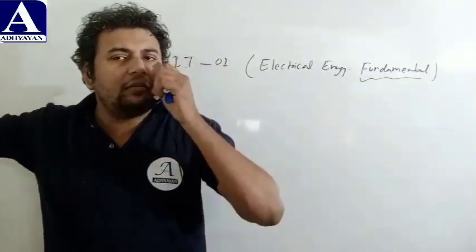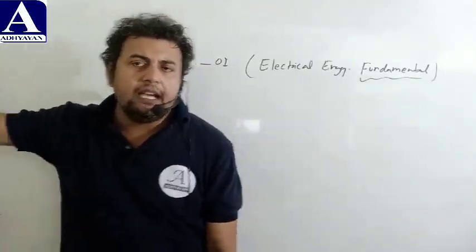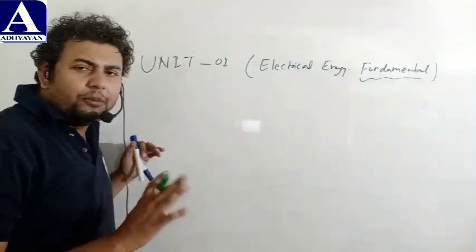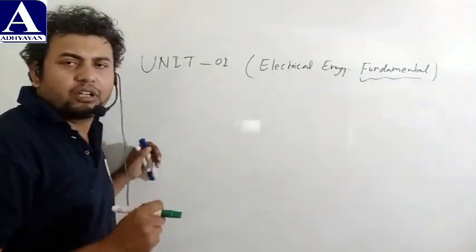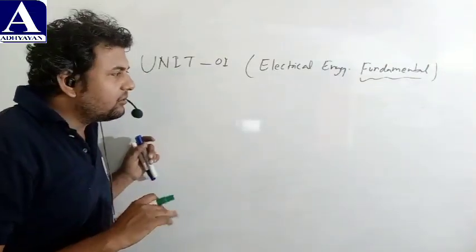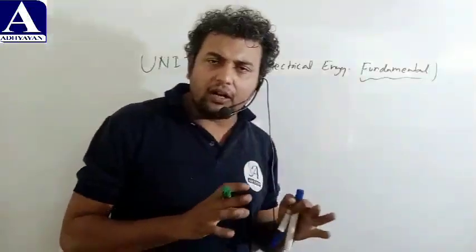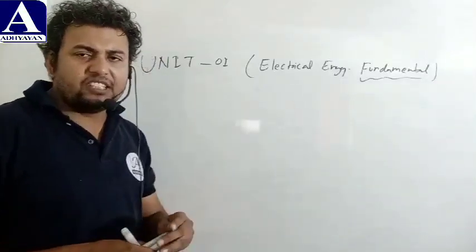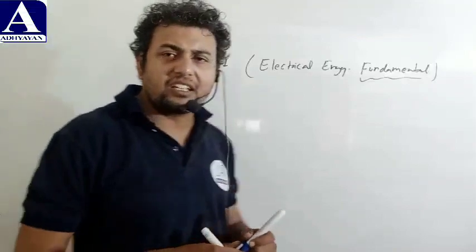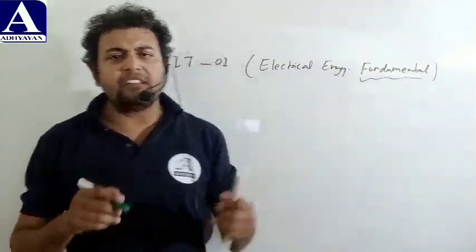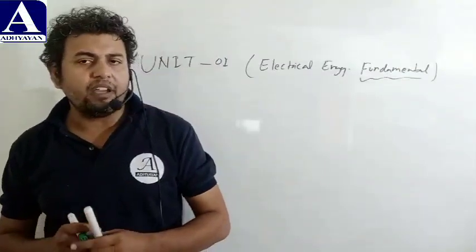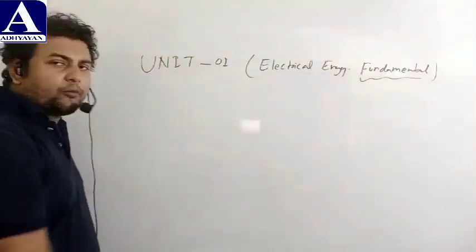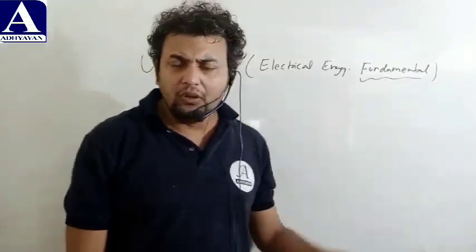थोड़ा बहुत आप पहले 9th, 10th में पढ़कर आए होंगे। जो metric pass के होंगे, चाहे वो किसी board से हों, उन्हें basic idea होगा - current किसको कहते हैं, voltage किसको कहते हैं, resistor क्या होता है। लेकिन हम लोग इस paper पर बिल्कुल basic से शुरू करेंगे। और भी topics जैसे voltage source, source transformation, resistance का physical dimension, temperature coefficient, inductor और capacitor की energy - ये सब इसी unit में cover किए जाएंगे।